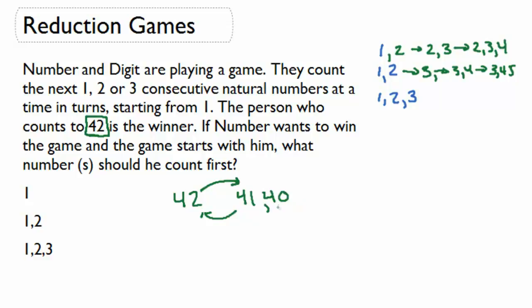What about 40? No, because then the other player could say 41 and then 42 and still win. If they had said 39 the time before, the other player again could have said 40, 41, 42.